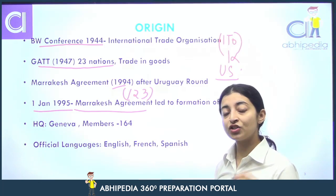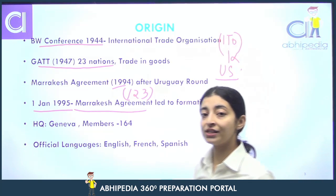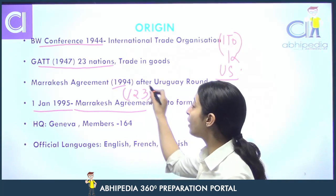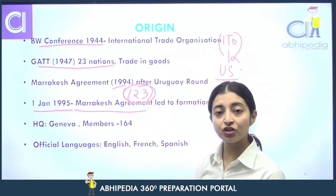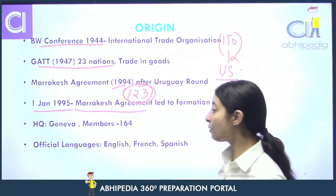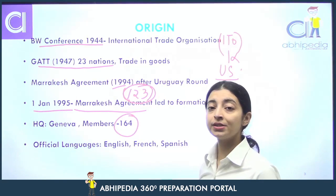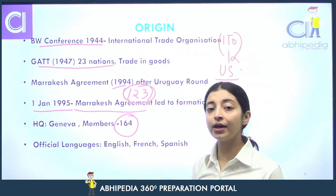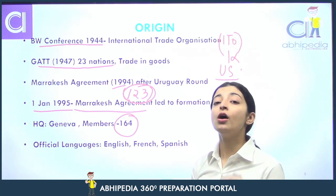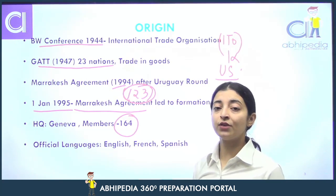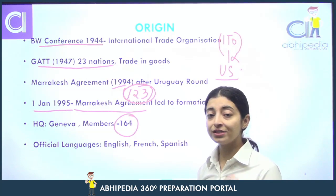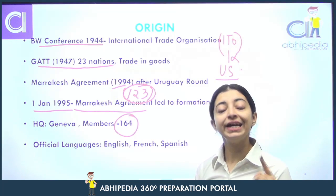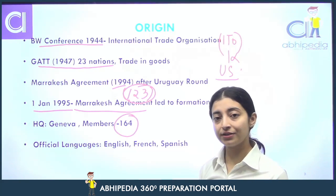Ab World Trade Organization ke kuch basics: jab ye sign kiya tha, 123 members ne sign kiya tha Marrakesh Agreement. Ab kitne members hain? 164 members hain. Iske jo headquarters hai, wo Geneva mein hai. Aur iske jo official languages hain, wo teen hain: English, French and Spanish.